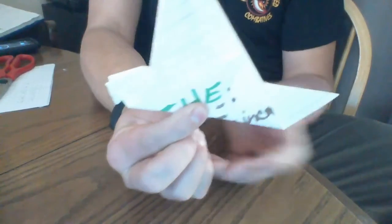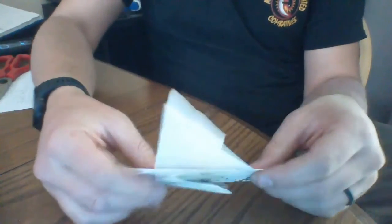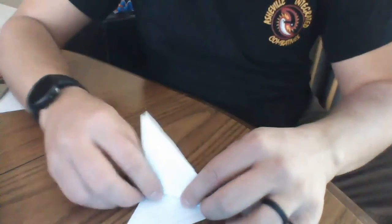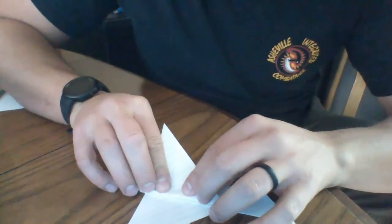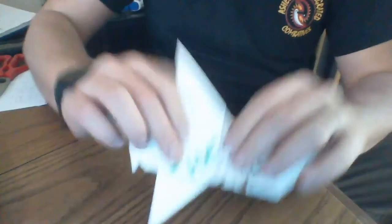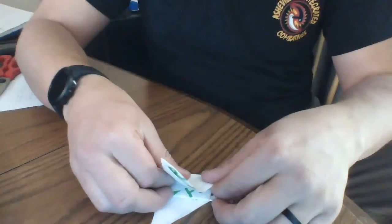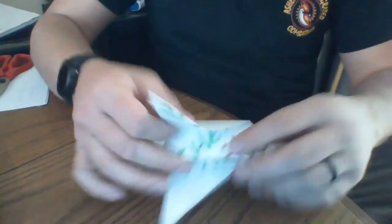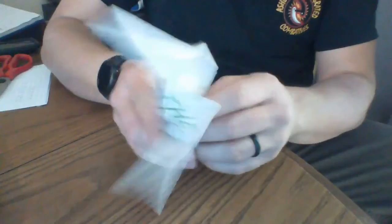And the last step is we're gonna take these wings and fold them down just to give it a little more dimension, make it a little less two-dimensional. Fold that one and fold the other wing the exact same way. And that gives us our bird.